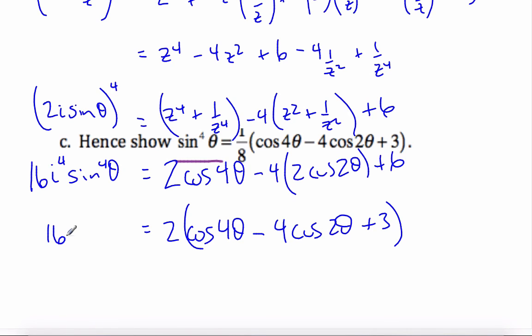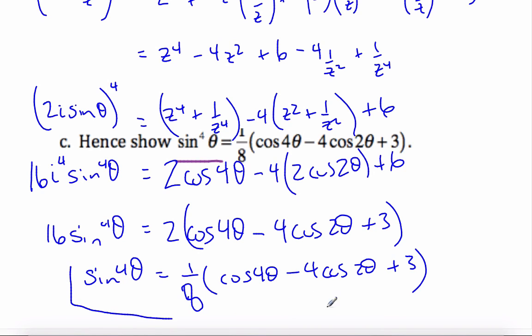i to the power of 4 is equal to positive 1. So it's 16 sine to the 4th theta. And if I divide by 16, I get 1 over 8 times cosine 4 theta minus 4 cosine 2 theta plus 3. I end up with my identity.